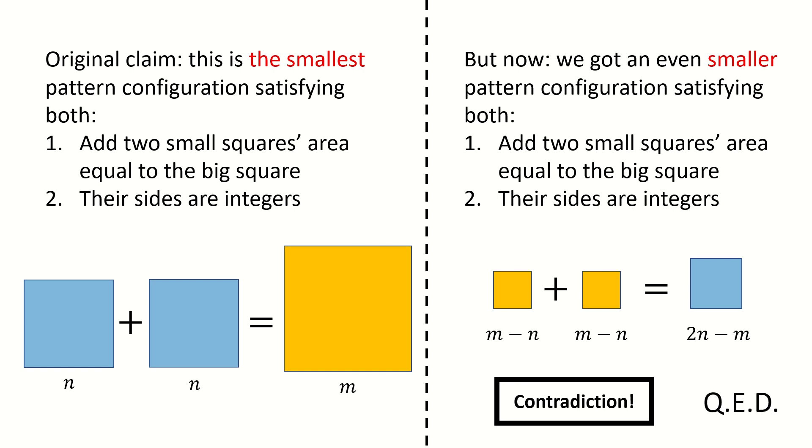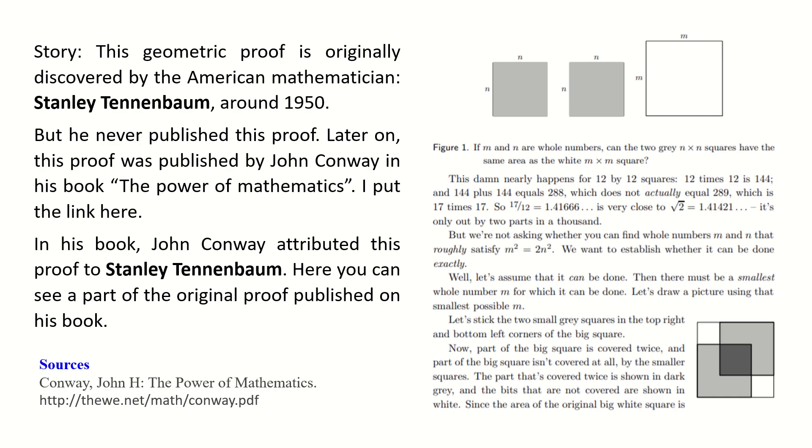Therefore, our initial assumption is false. So the square root of 2 must be irrational. At the end of this video, I use one slide to summarize the story on the discovery of this proof.